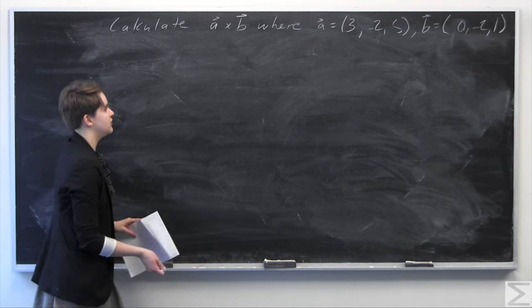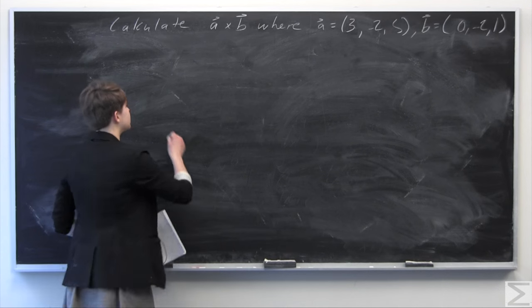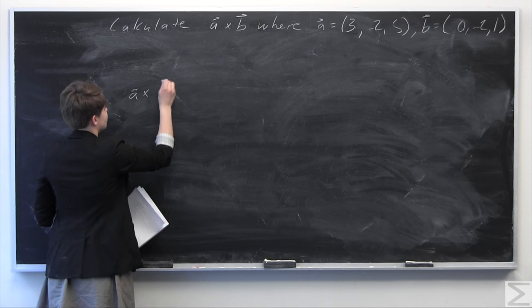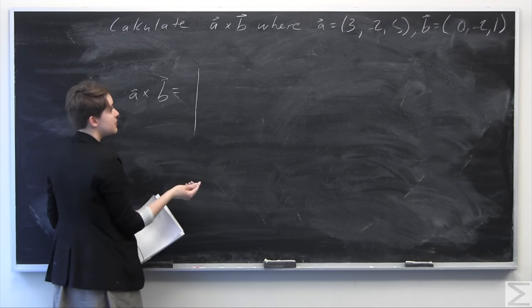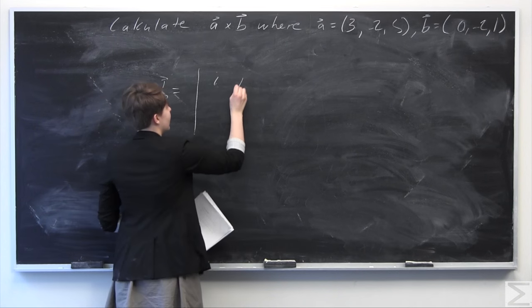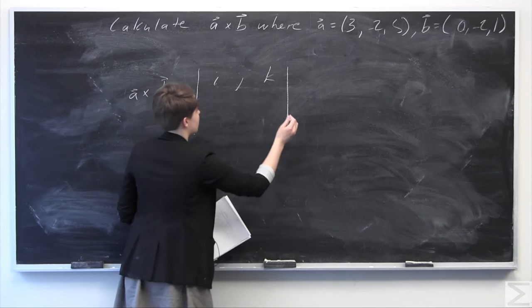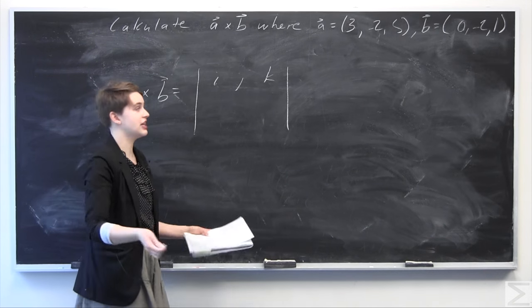We're going to use the formula for the cross product. We'll set up vector A cross vector B equal to the determinant of the following matrix. We have i, j, and k - our unit vectors in the i direction, j direction, and k direction.